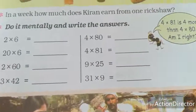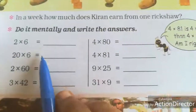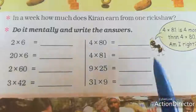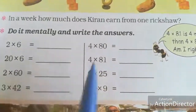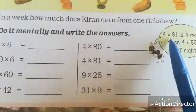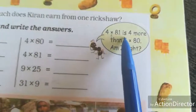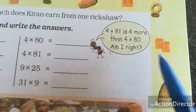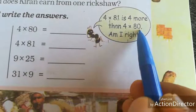Now, do it mentally and write the answer. We are going to do these mentally. See, one hint is there — 481 is 4 more than 480. Am I right? Yes, correct. We know 4 eights are 32.